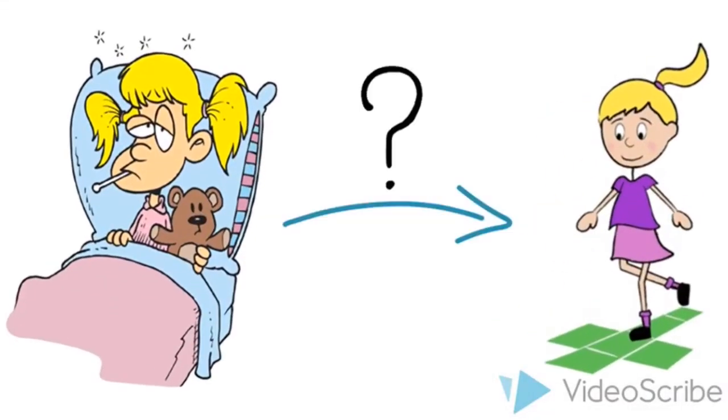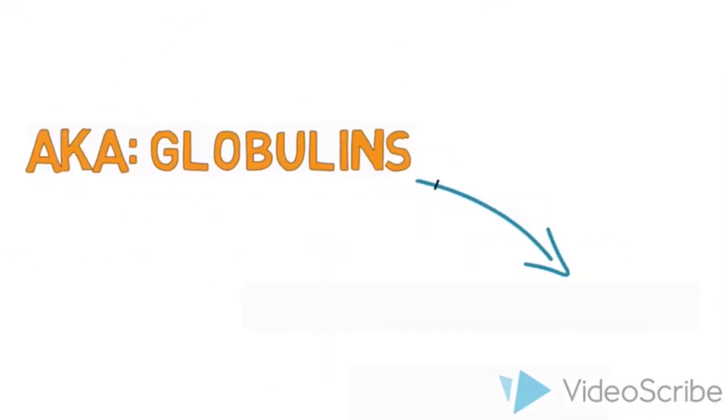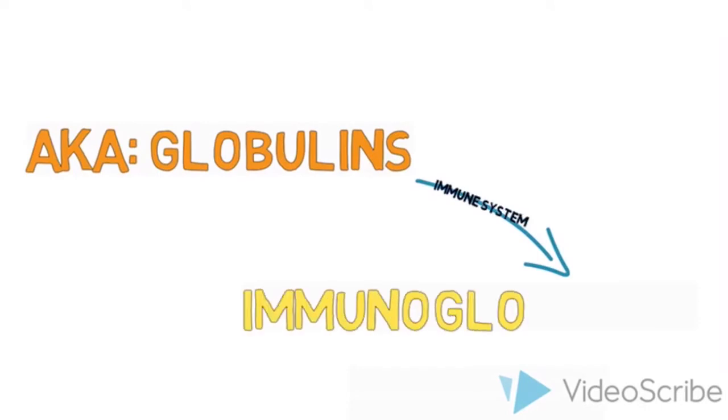The chemical basis of the human body's ability to beat disease is by antibodies. Antibodies are complex protein structures known as globulins. But because globulins have a direct relationship with the immune system, they are often referred to as immunoglobulins.